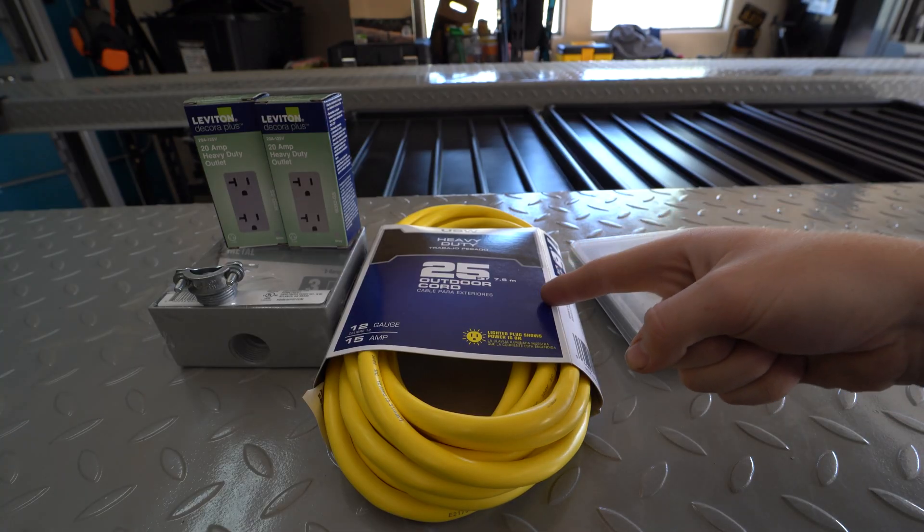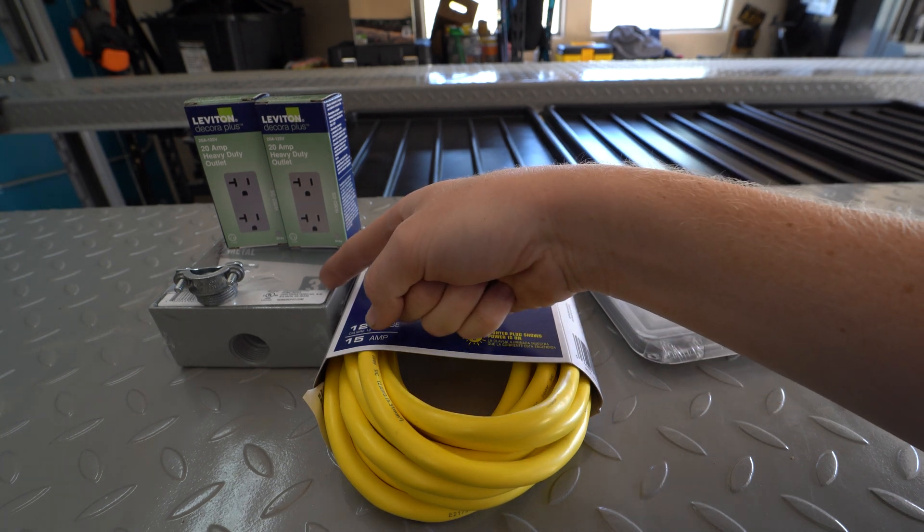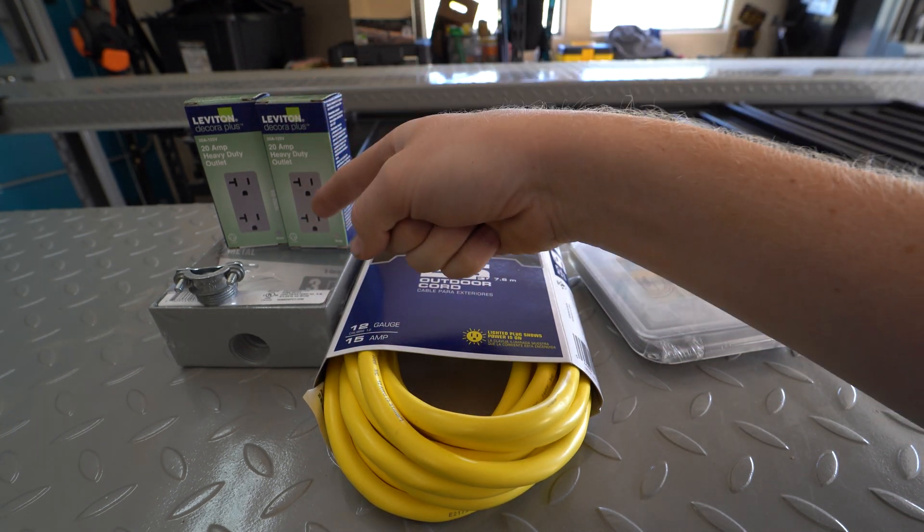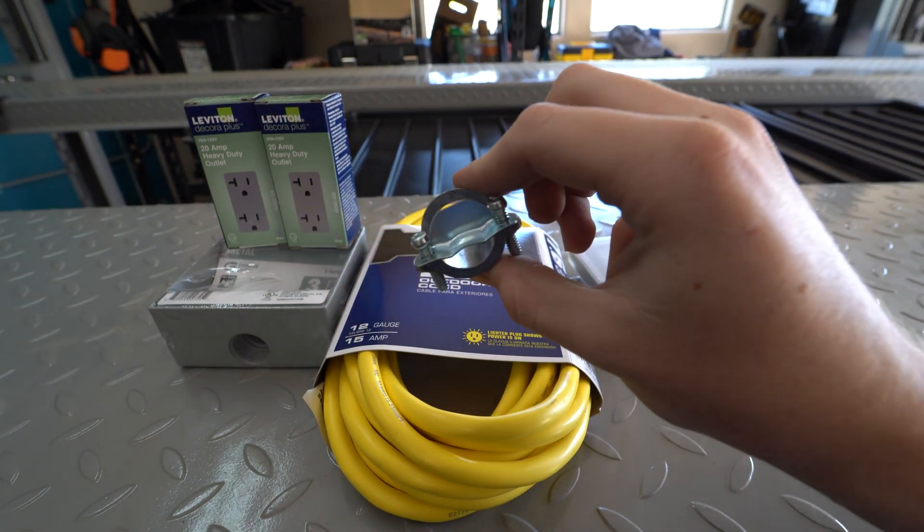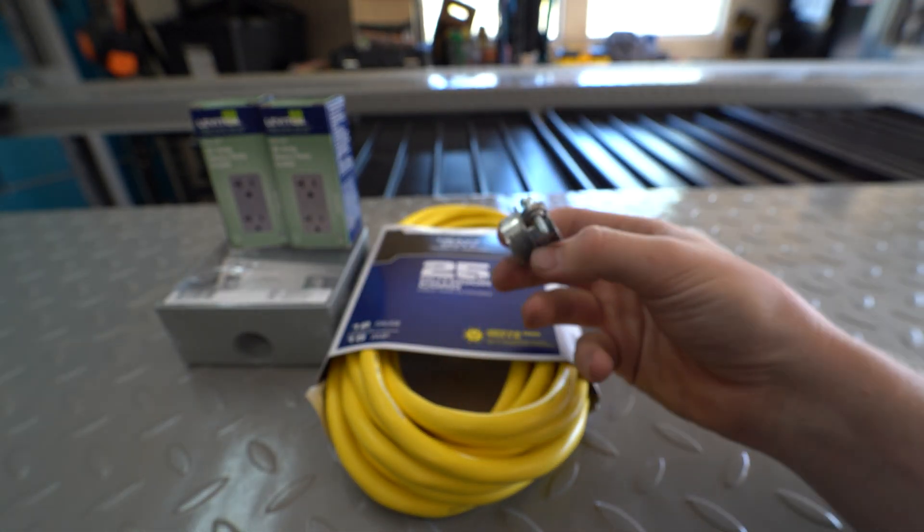You're going to need a cover as well as a heavy-duty extension cord, a two-gang electrical box, and two 20 amp receptacles. You're also going to need this little clamp which is used to hold the extension cord into the electrical box.